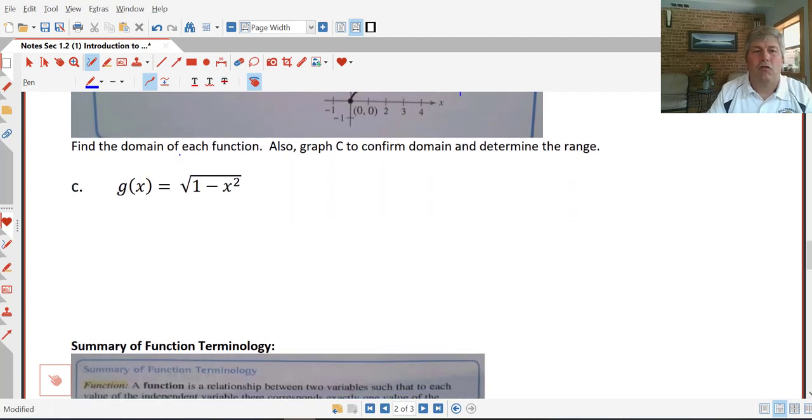So find the domain of each function. Also graph c to confirm the domain and determine the range. So in this particular one, we're doing the square root function again.